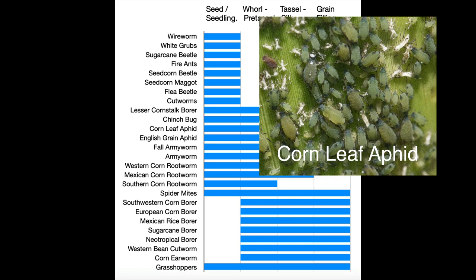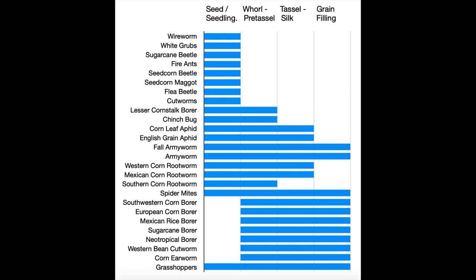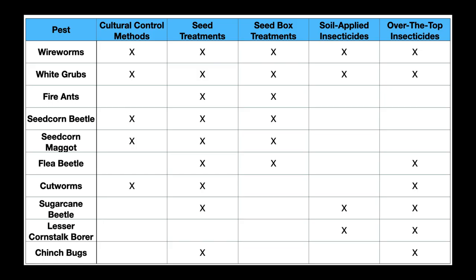Other pests, while frequent, can be controlled effectively with cultural practices, BT corn, or timely insecticide applications. Let's break this list down a little bit.